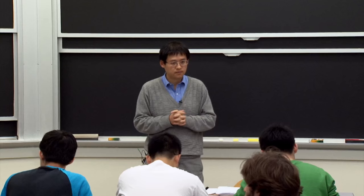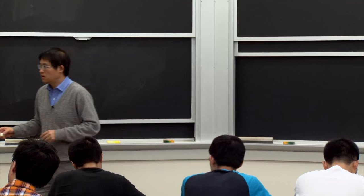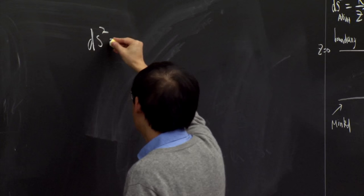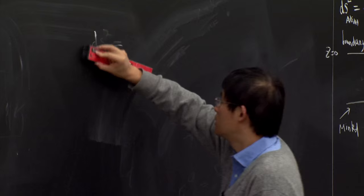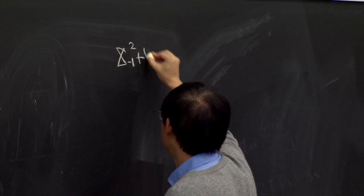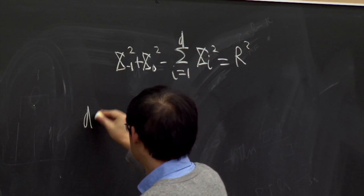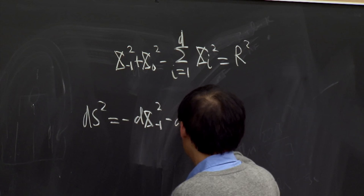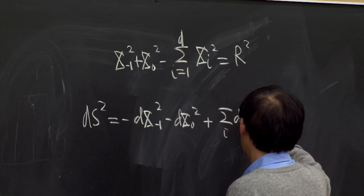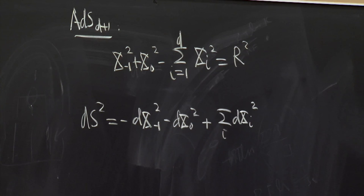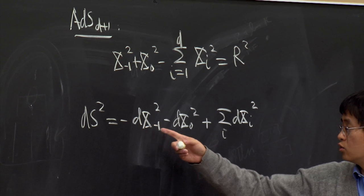Anti-de Sitter spacetime can also be defined as a hyperboloid in the (d+2)-dimensional Minkowski spacetime with signature (2, d) — that is, with two time directions.